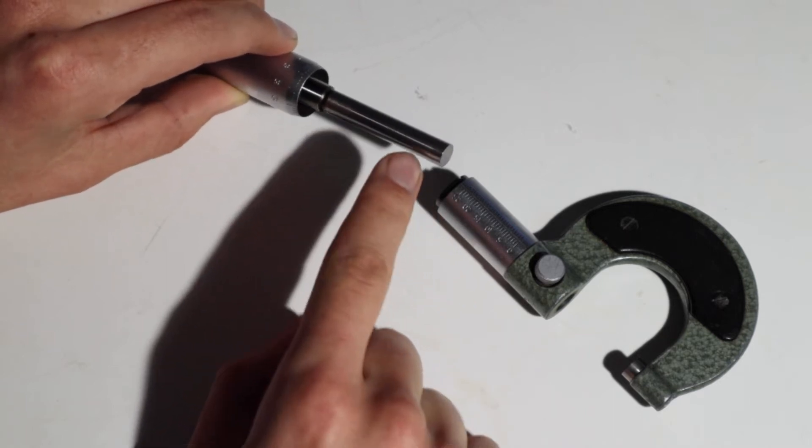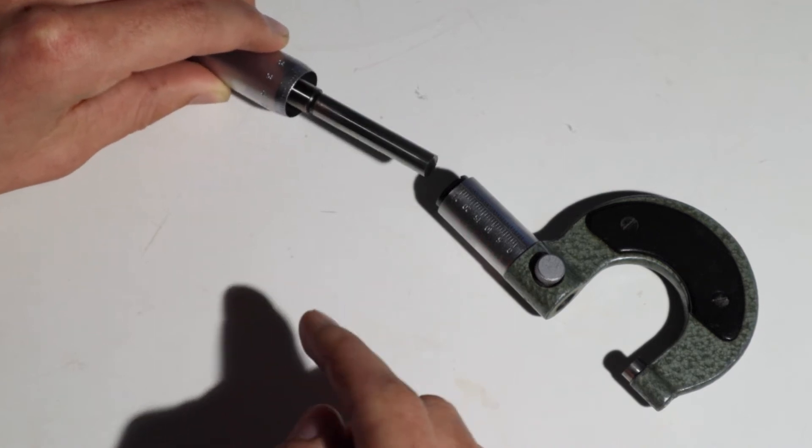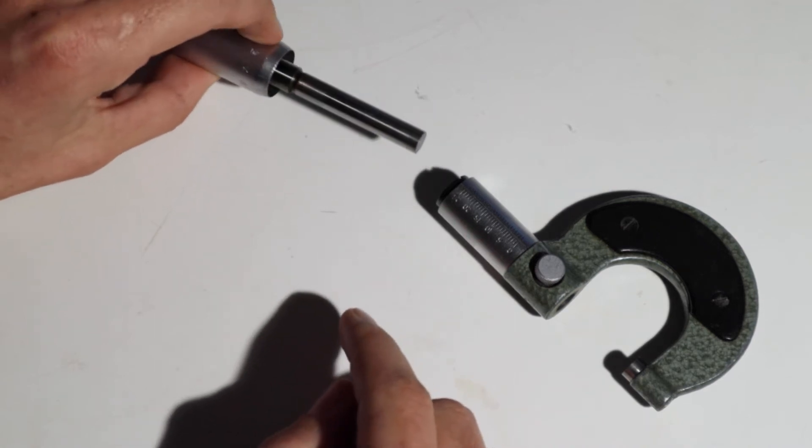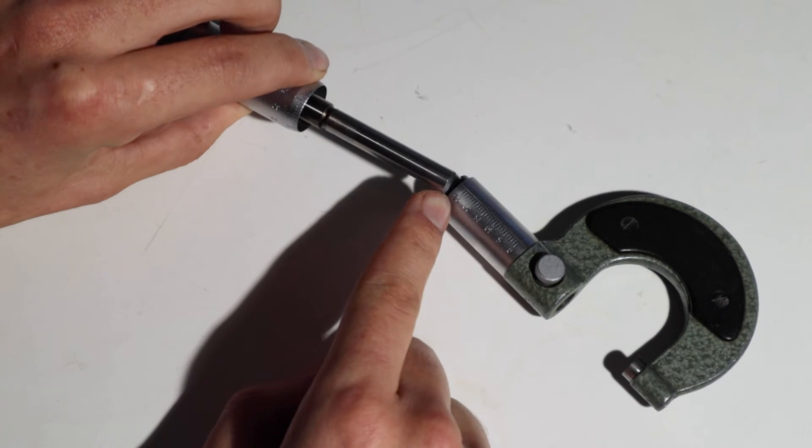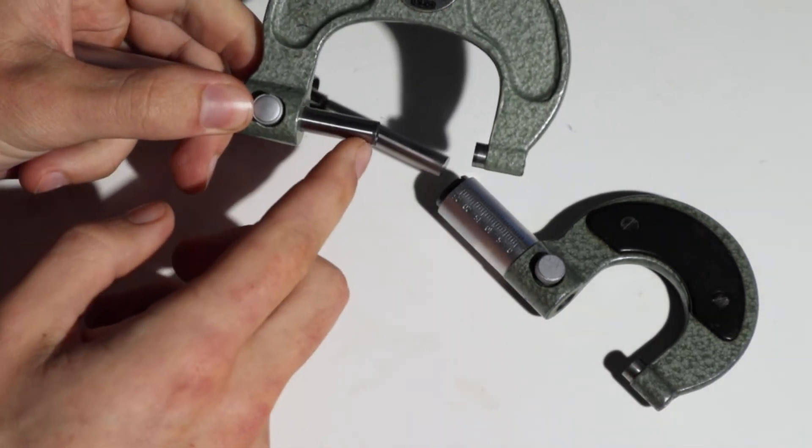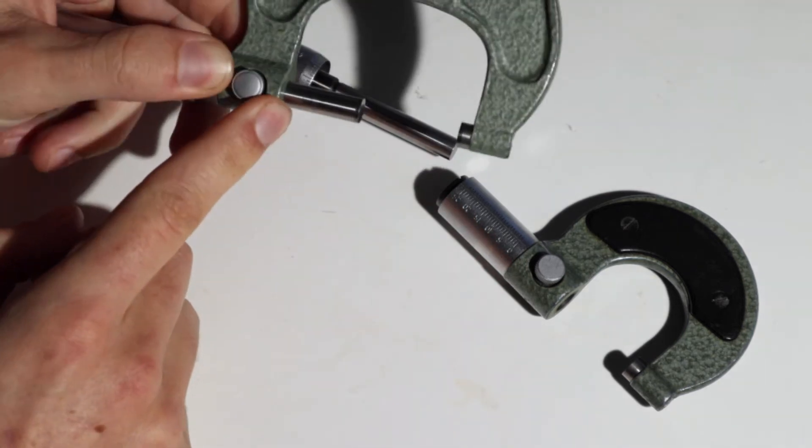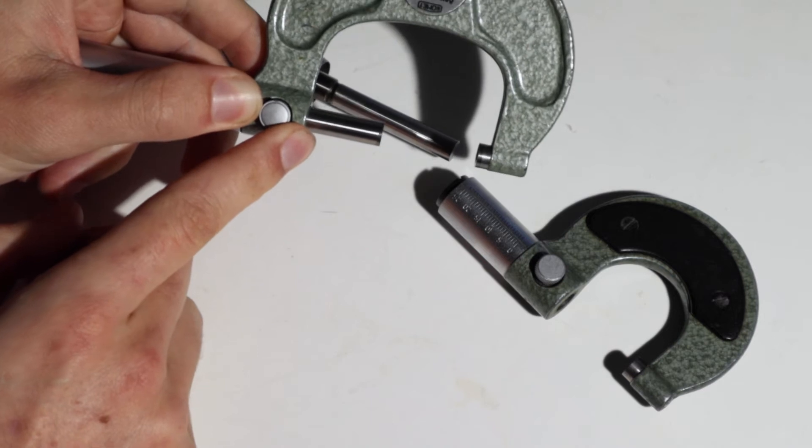And sometimes the phases are made from different material which is a little bit more wear resistant. This particular one has the same material but I have a 25 to 50 millimeter example here which has a different material on the measuring phase. Hopefully you can see it a little bit on the camera.